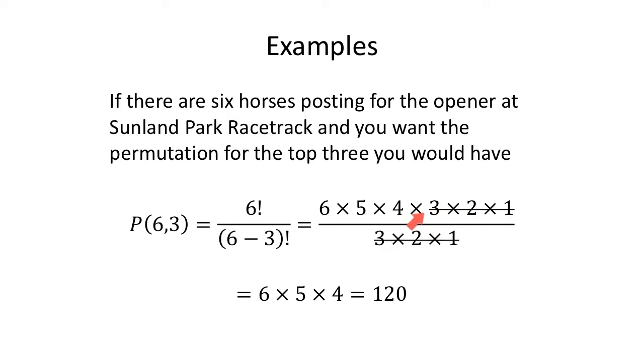So operation in parentheses first, and then factorial. Notice the 3, 2, 1 cancel out. This is the same as 6, 5, 4 being multiplied. What is this really saying? Six horses that are posting for the opening race at Sunland Park. All six of them theoretically have an option to coming in first. Once that first horse crosses, there are five horses left that could come in second place. Once that second horse crosses, there are four horses that could come in third place. We only care about the top three. So 6 times 5 times 4. 30 times 4 is 120 different ways you could pick the trifecta.